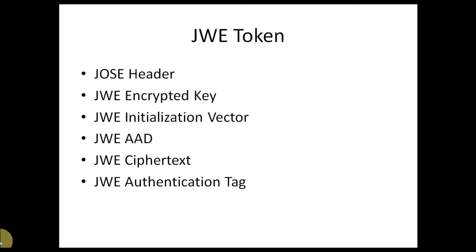These 6 parts form the JWE token. First is the header, which explains the metadata of the token. Second is the encrypted key — the key used to encrypt the content of the JWE token. Third is the initialization vector, which is similar to the cryptographic world and provides a supporting mechanism for strong encryption. Fourth is AAD — Additional Authentication Data — which is simply a Base64-encoded format of the header. Ciphertext and authentication tag are the outputs of the encryption process of the actual payload.